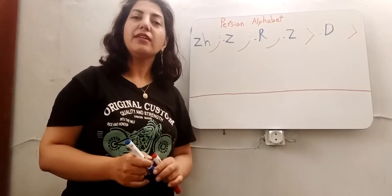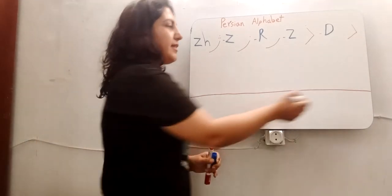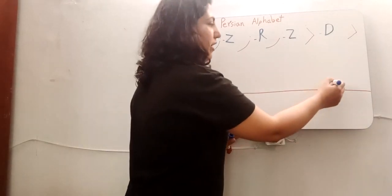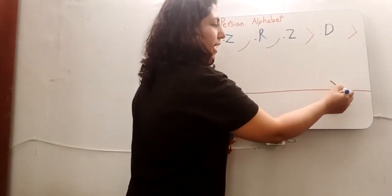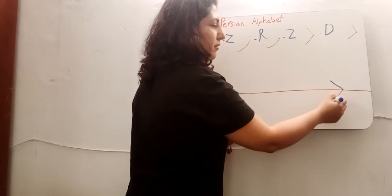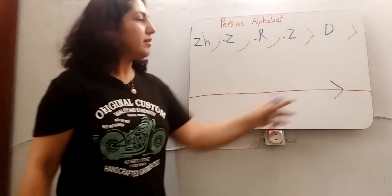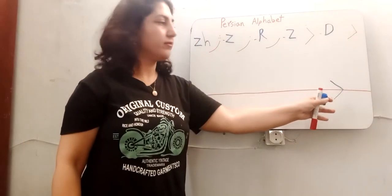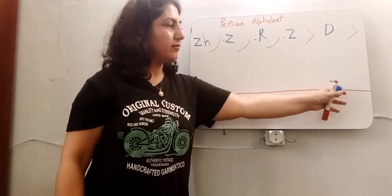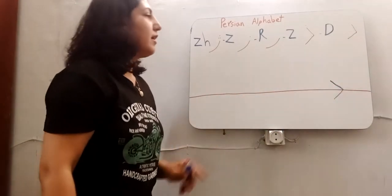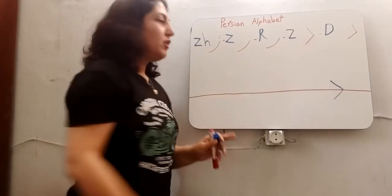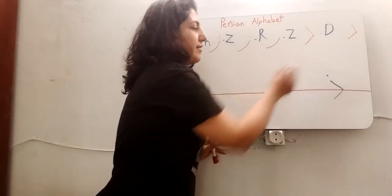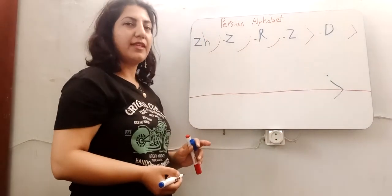How to write D? This is my baseline in my notebook. I draw a line and come down like a triangle. I put one dot and I have Z, the letter Z.